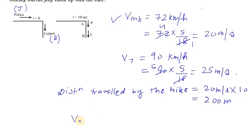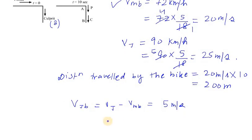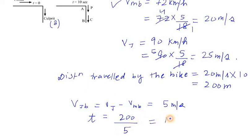The difference between the speeds — Vj minus Vmb — is 25 minus 20, which equals 5 meters per second. Now we find the time taken for the jeep to catch up: time equals 200 meters (distance traveled by the bike) divided by 5 m/s (the velocity difference), which gives 40 seconds.